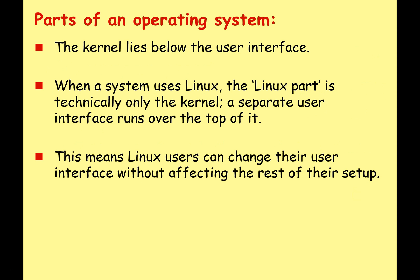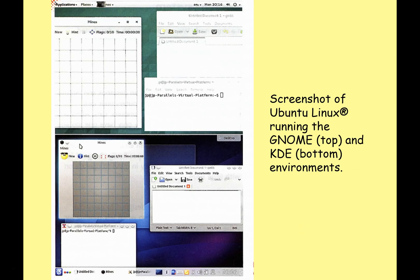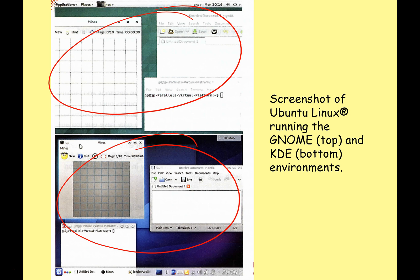The kernel lies below the user interface. In an operating system like Windows, the user interface and the operating system are very much tied together — you can't really change the look and feel of Windows too much. But in Linux, the Linux operating system is technically only the kernel; there's a separate user interface that runs on top of it. You can change the Linux user interface very easily, which will completely change the look and feel, but the kernel is still the same. For example, we've got different versions of Ubuntu — GNOME, KDE, and others — but it's still the same operating system because it's the same kernel underneath.